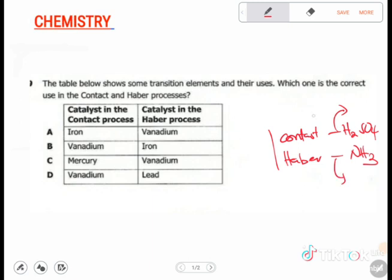So for sulfuric acid, which is the Contact process, we use vanadium pentoxide. Now the question is looking for a transition element, so that's why we are only considering vanadium. And here we use iron, so the answer is B.